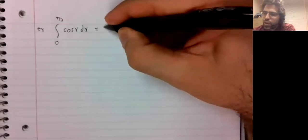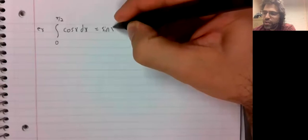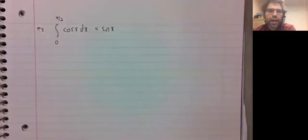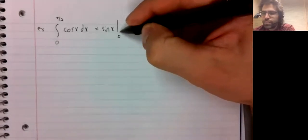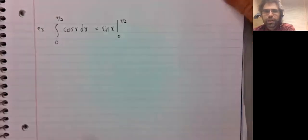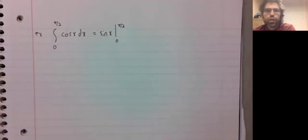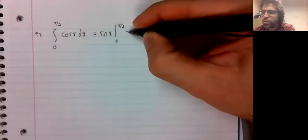Well, hopefully we recognize that the sine of x is an antiderivative of the cosine. And we evaluate it from zero to pi divided by two.